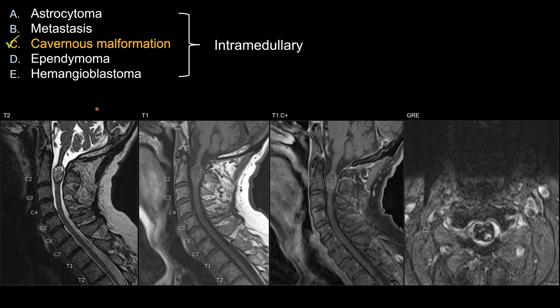Let's look at the other choices that do not work as well in this case. All five lesions are intramedullary lesions, so location is correct for all five choices. One lesion I will eliminate quickly is metastasis, since intramedullary metastasis is not that common, and a non-enhancing metastasis would be quite unusual — metastasis should generally enhance.